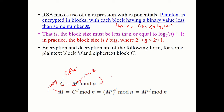For decryption, you take the ciphertext C to the power D mod n to recover the message. D is also a prime number. Combining both, M equals M^(E·D) mod n, so M equals M^(ED) mod n.